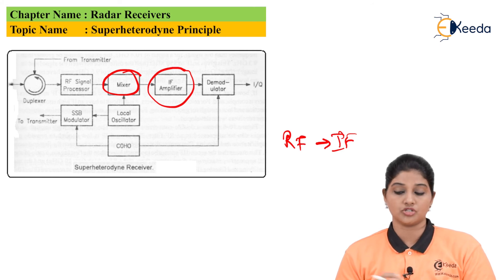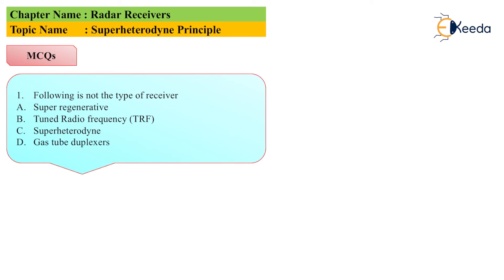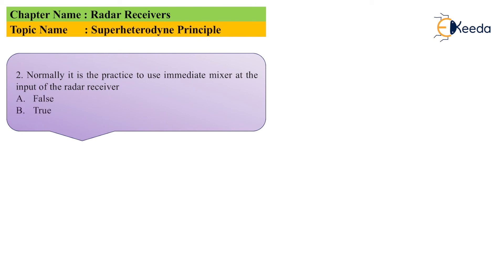Now let's move to the multiple choice questions. The first question is: which of the following is NOT a type of receiver? Option A: super regenerative; Option B: tuned radio frequency (TRF); Option C: super heterodyne; Option D: glass tube diplexor. The answer is Option D — the glass tube diplexor — as its name indicates it is a diplexor and therefore cannot be a type of receiver. The second question: is it normal practice to use an intermediate mixer at the input of the radar receiver? The answer is Option B — True.